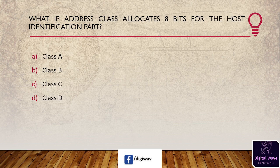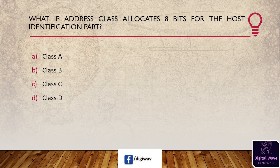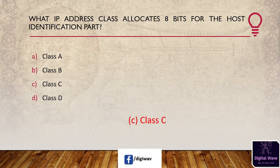Next question: what IP address class allocates 8 bits for the host identification part? Options are Class A, Class B, Class C, and Class D. The answer is Class C — in Class C, only 8 bits are reserved for the host ID and 24 bits are reserved for the network ID.